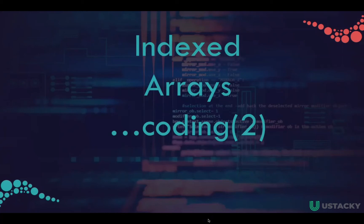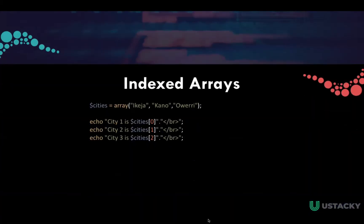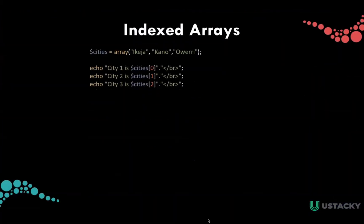In this tutorial, let us write some code on index arrays. In the last tutorial, we were able to print each item in the array with its code. If we study the code very well, we noticed some things. The first one is that this piece of code is a form of repetition, so it means this is a loop.